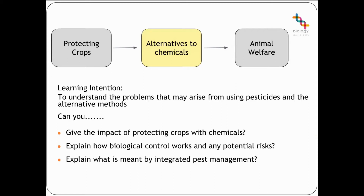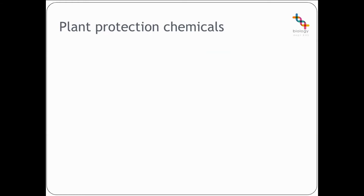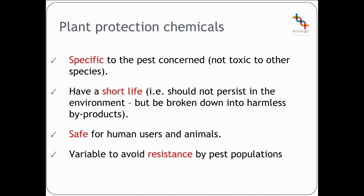We need to consider what would be important when designing a plant protection chemical. They really need to be specific to the pest concerned, so not toxic to other species. They need to have a short life, so not persisting in the environment but broken down into harmless by-products. They need to be safe for human users and animals, and ideally they should be variable, which helps them avoid resistance by pest populations.